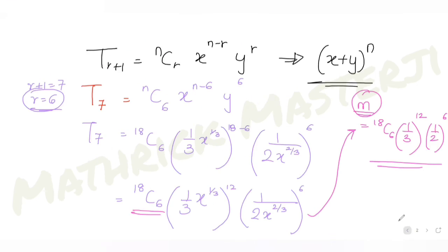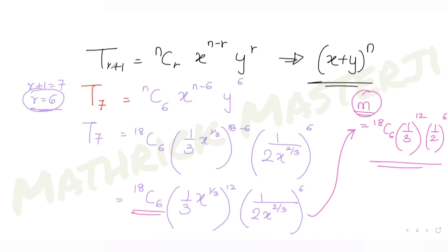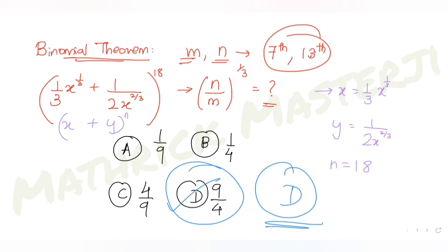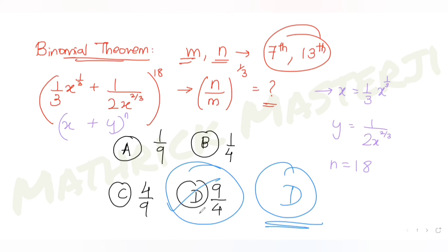So we get (1/4) / (1/9) = 9/4. The answer to this question is 9/4, which matches option D. We used the (r+1)th term formula, found coefficients m and n for the 7th and 13th terms, took their ratio, and raised it to 1/3 to get 9/4.